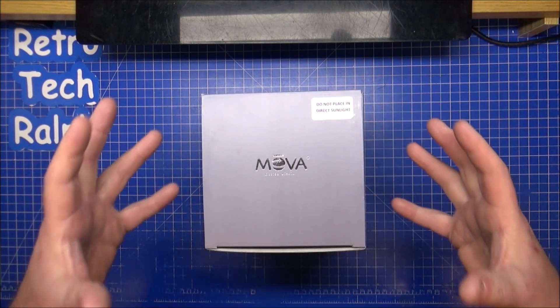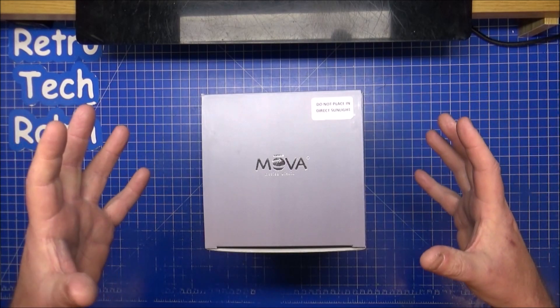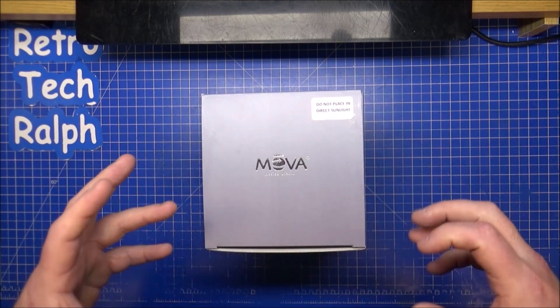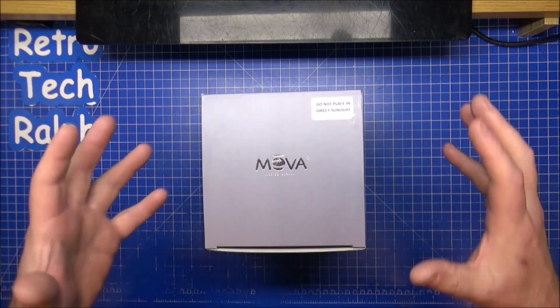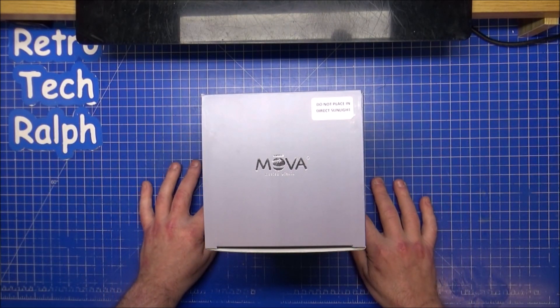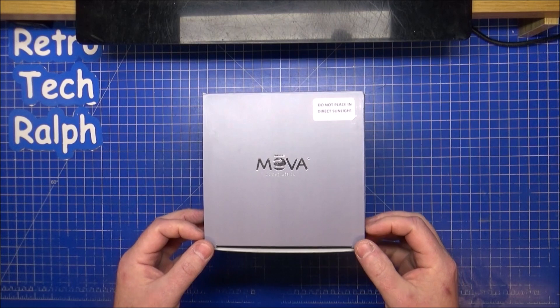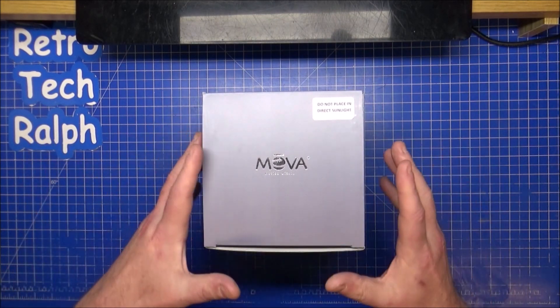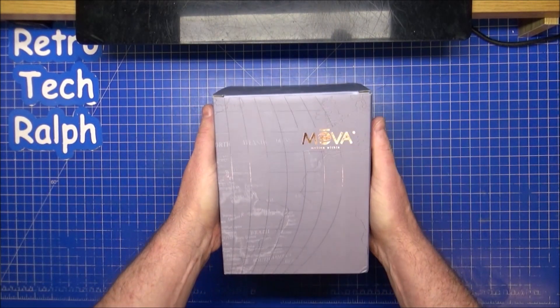I wanted the bigger Jupiter Saturn ones, the larger ones, because these are under four and a half inches. I wanted the big nine inch globes but I can't afford them—they are ridiculously expensive. But they are so good to see.